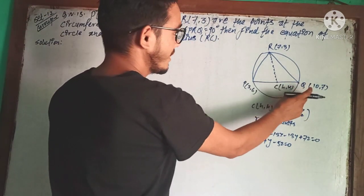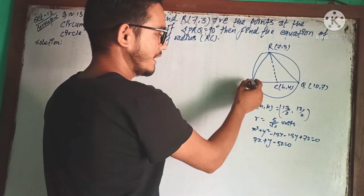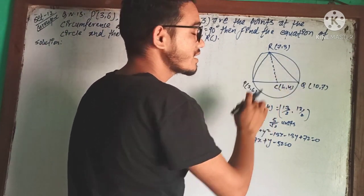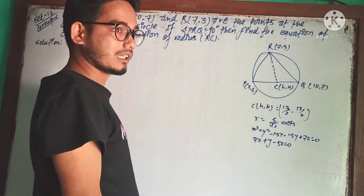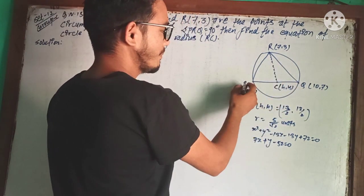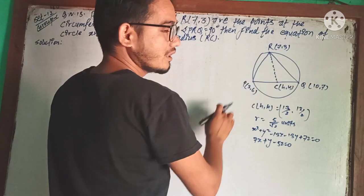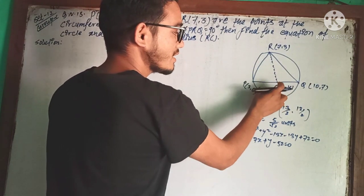Since angle PRQ is 90 degrees, PQ must be the diameter of the circle. The midpoint of PQ will be the center.